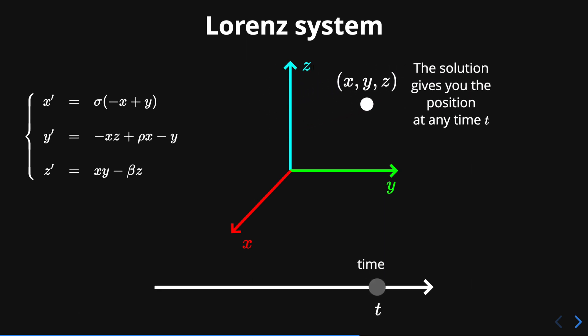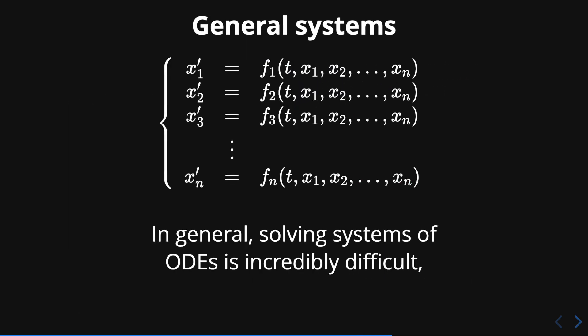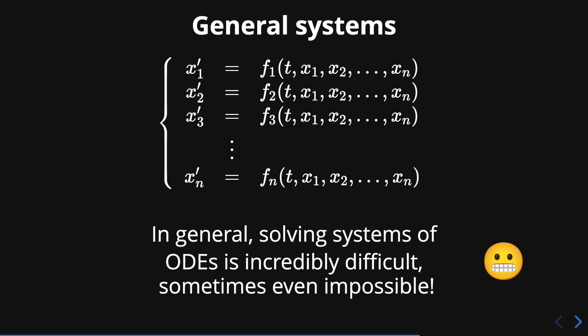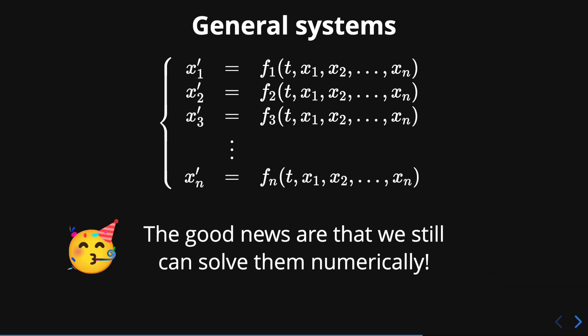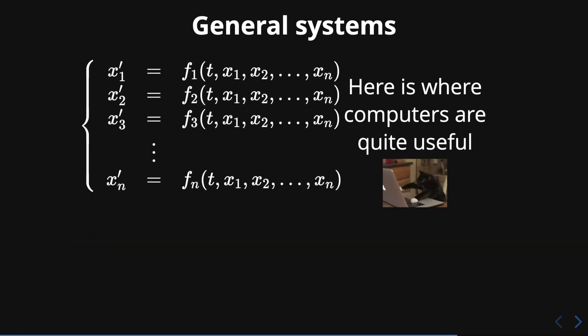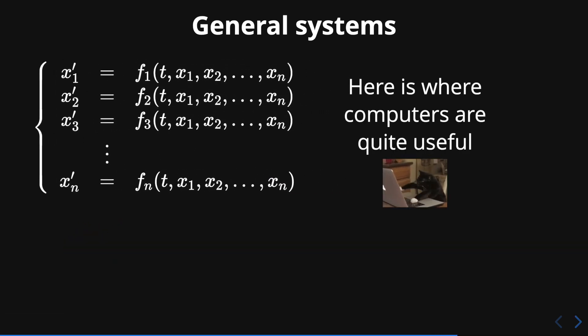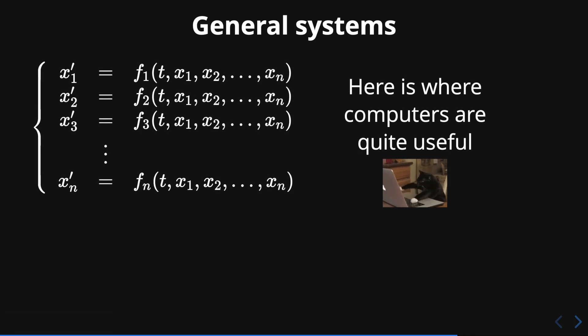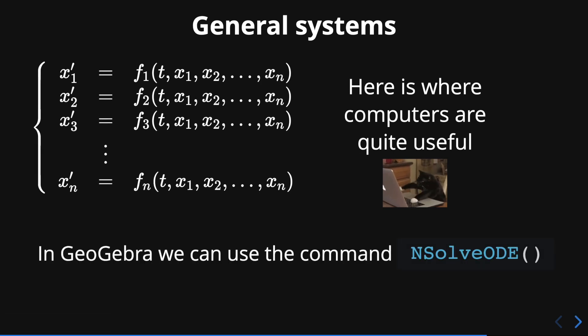The Lorenz system is a particular case of systems of ODEs, and in general they are incredibly difficult to solve. In fact, in some cases it is even impossible to find an analytic solution. The good news is that we can still solve them numerically, and here is where computers are quite useful. In GeoGebra, we can use a built-in command called nsolveode.